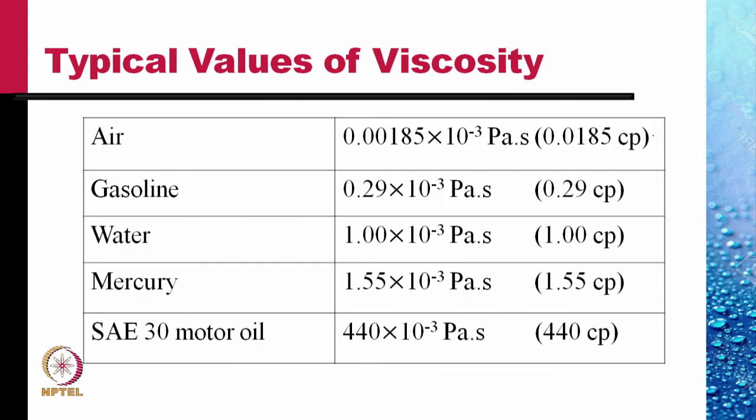There is a wide variation of viscosity. Air has a viscosity of 0.0185 centipoise. For gasoline it is 0.29 centipoise. For water, as we just said, is 1 centipoise. Mercury is more viscous, 1.55 centipoise. The SAE 30 motor oil that you use in your cars is typically 440 times the viscosity of water, 440 centipoise. Very viscous. Glycerine is also a very viscous substance.